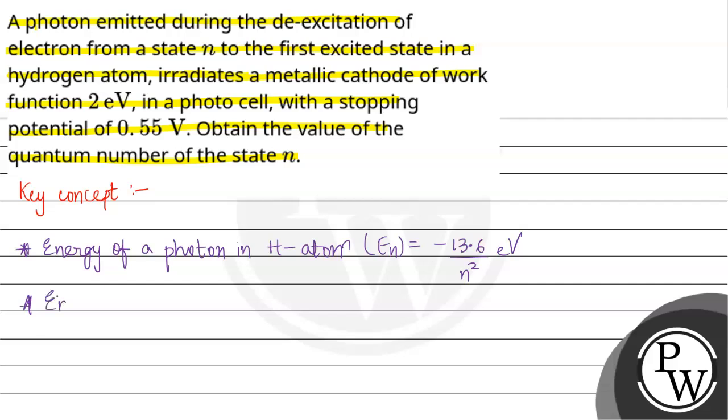From Einstein's photoelectric equation, the energy of the photon is equal to work function plus K max. We have work function, K max is charge times stopping potential.